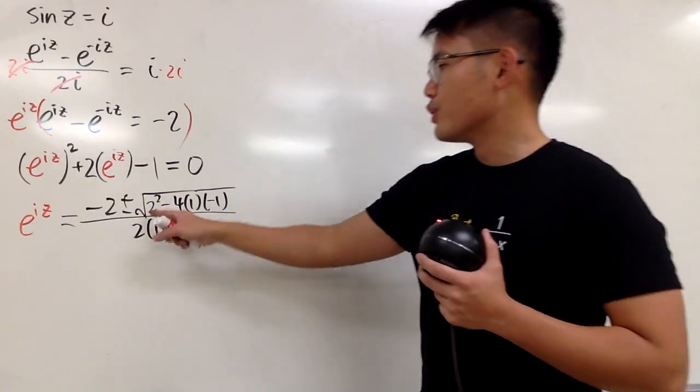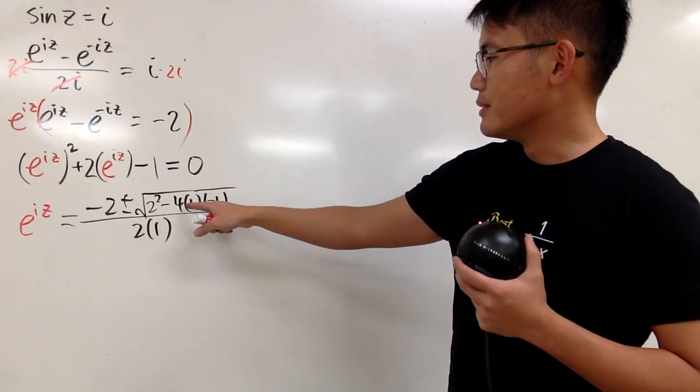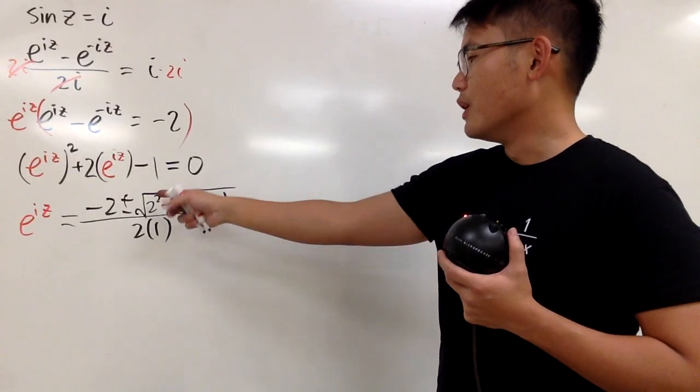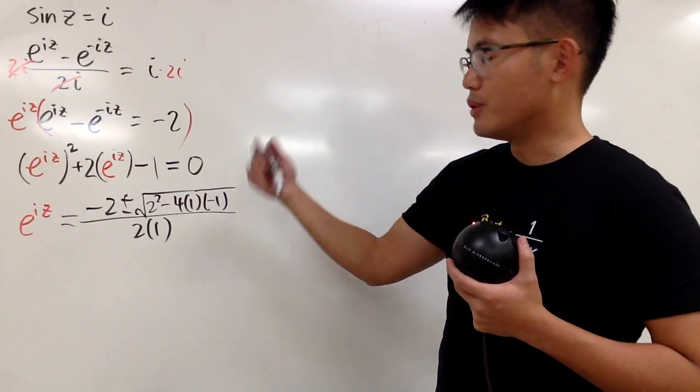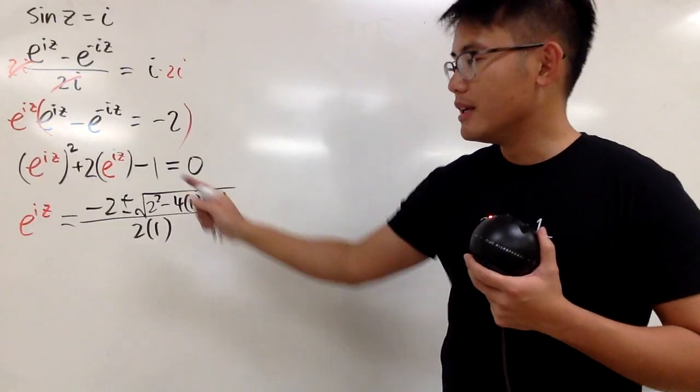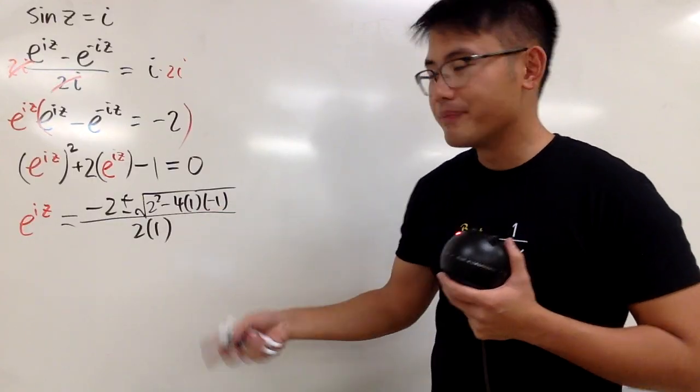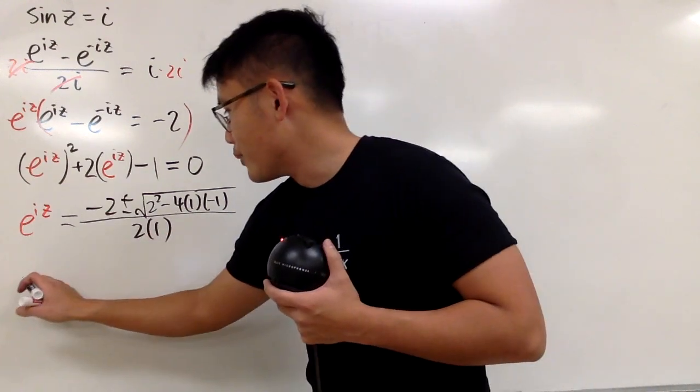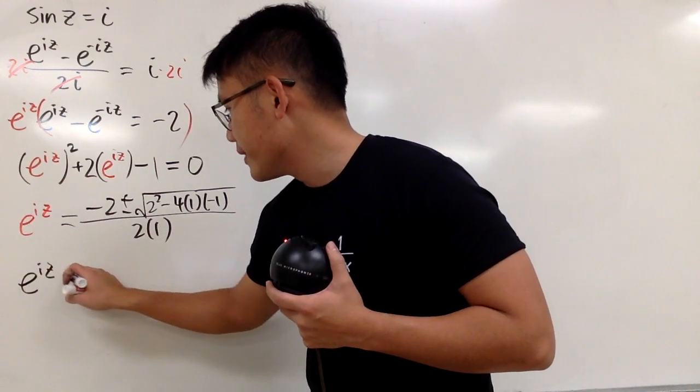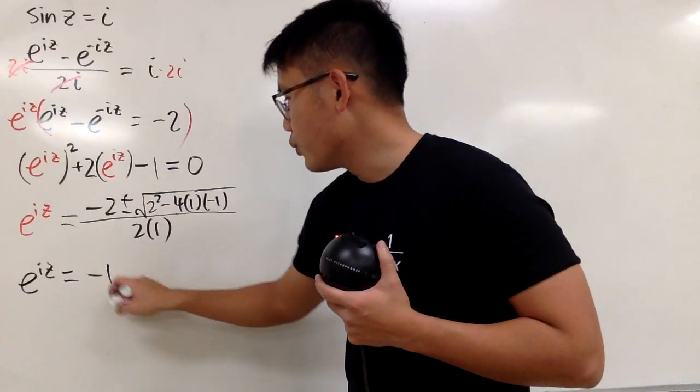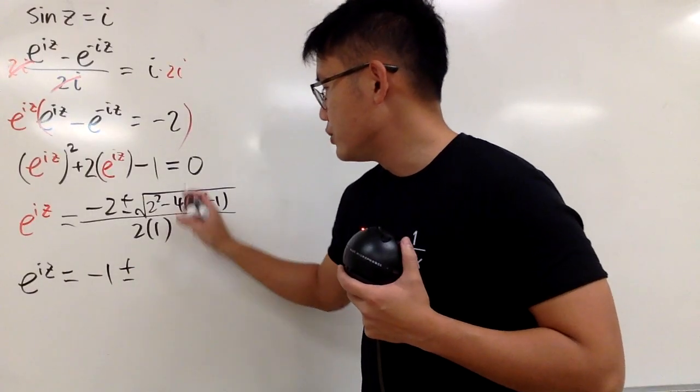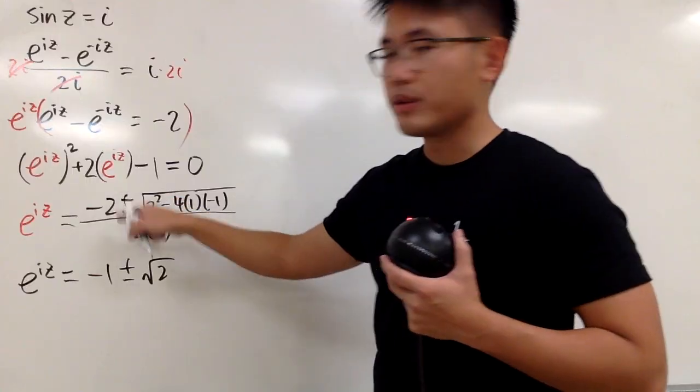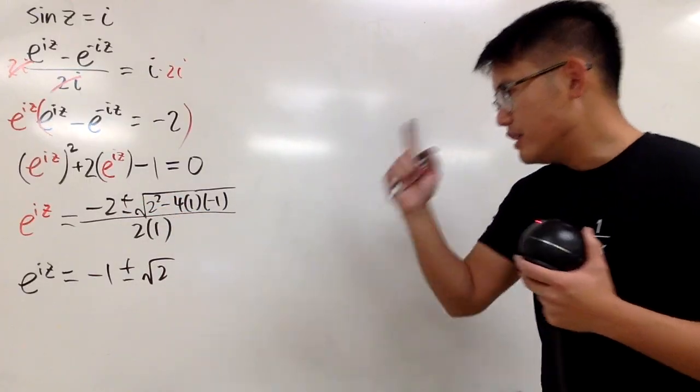Now, let's do this in our head. 2 squared is 4, minus this is minus negative 4, so 4 minus negative 4, which is 8. Square root of 8 is 2 square root of 2. I have the 2 on the outside. This is a 2. This is also a 2, so we can cancel things out. In another word, right here, I get e to the iz equals, I get negative 1 plus minus just square root of 2 right here, because we cancel the 2's already. So this is good.